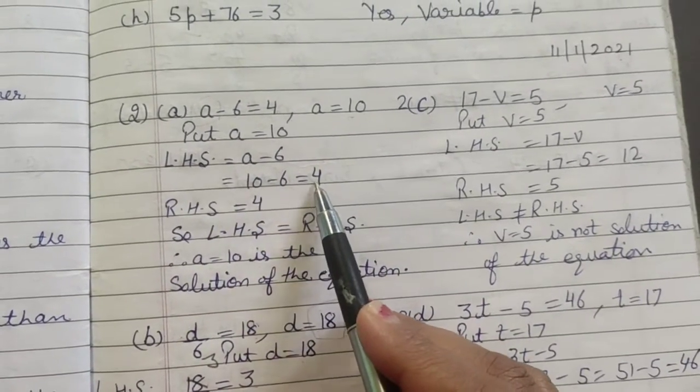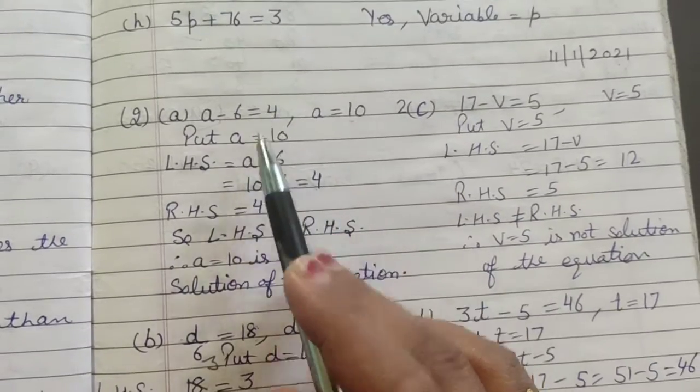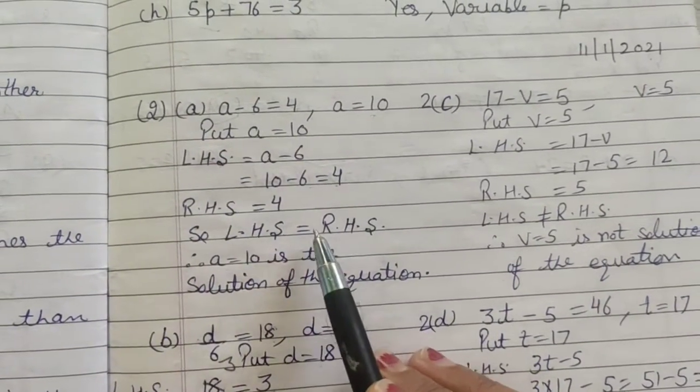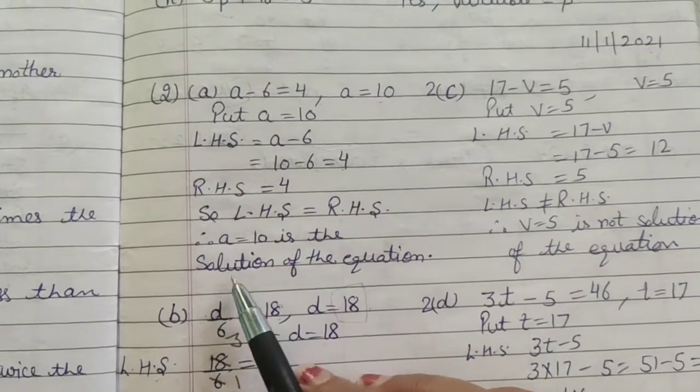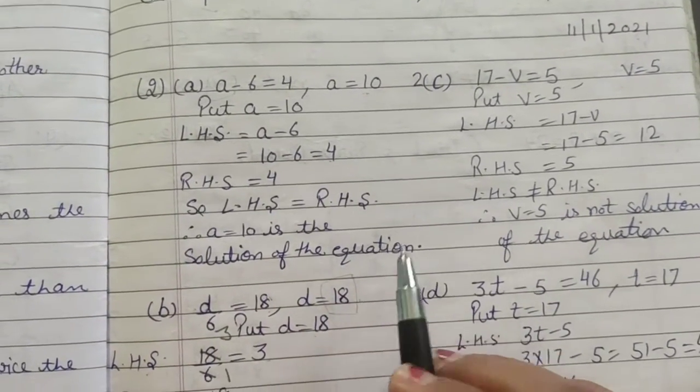So 10 minus 6 is 4, and 4 is also in our right hand side. So it means our left hand side equals right hand side. Therefore a equals 10 is the solution of the equation.